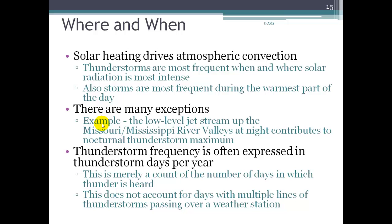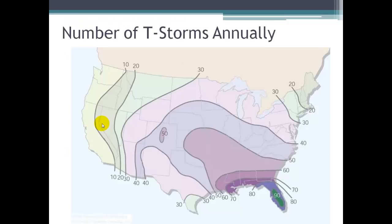There are exceptions to this pattern. One example the book discusses is the low-level jet stream that moves up the Missouri-Mississippi River Valley at night, contributing to a nocturnal thunderstorm maximum — so you get nighttime thunderstorms there. Thunderstorm frequency is often expressed in thunderstorm days per year, which is simply a count of days on which thunder is heard, so it depends on someone hearing the thunder and likely underestimates actual activity.